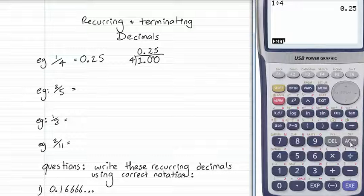Our next one, 2 divided by 5, 0.4. Another terminating decimal.